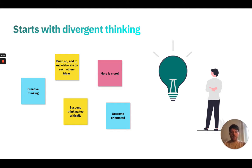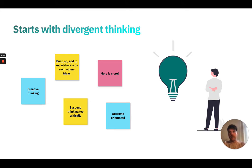That problem statement then creates conversations where we will diverge on possible solutions. Some examples here of how we can do that, but it's about suspending critical thinking — more is more. We want to generate a lot of ideas and build and elaborate on other people's ideas as well. One person may post an idea on the board that we can then begin to expand on, and creative thinking is something the whole team — from development to analysts as well as designers — can get involved in.